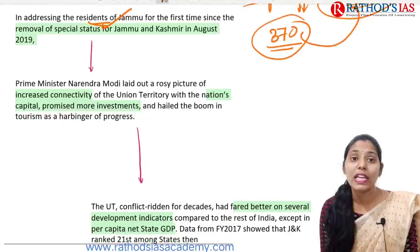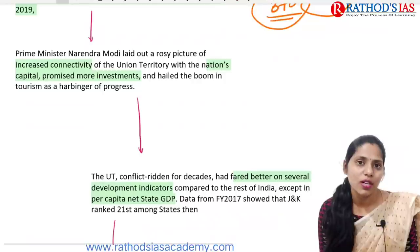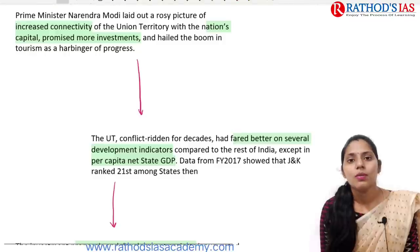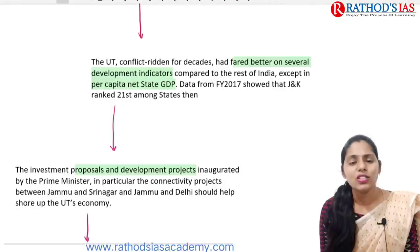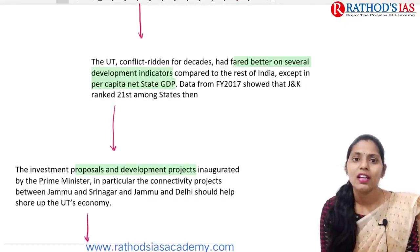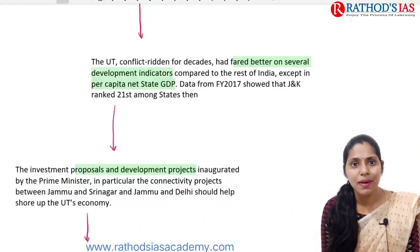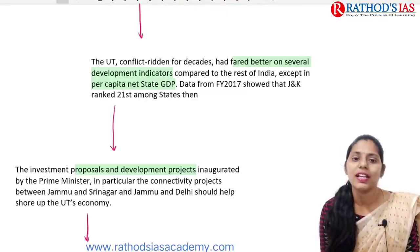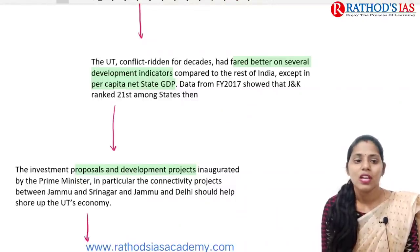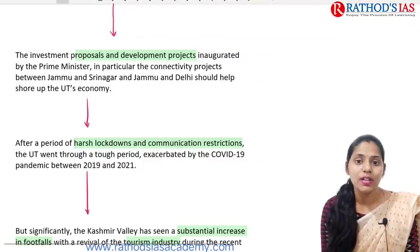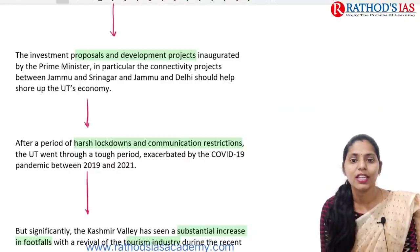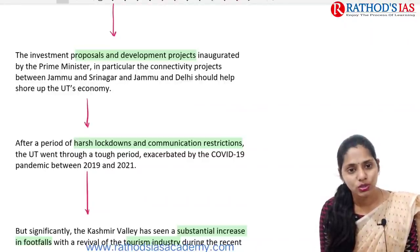The government is focusing on increasing connectivity and more investments in Jammu and Kashmir, and also on boosting tourism in this area. Jammu and Kashmir was conflict-ridden for decades, and now there are some better indicators being seen. However, state GDP is very less compared to the rest of the states in India. Investment proposals and developmental projects have been inaugurated by the Prime Minister, including connectivity projects between Jammu-Srinagar and Jammu-Delhi, which will be helpful for picking up the J&K economy.